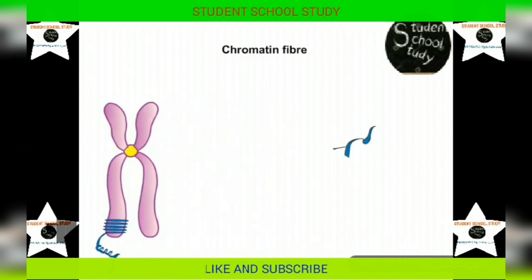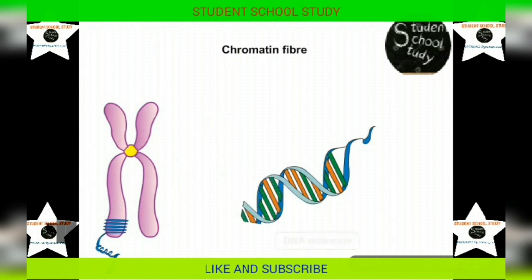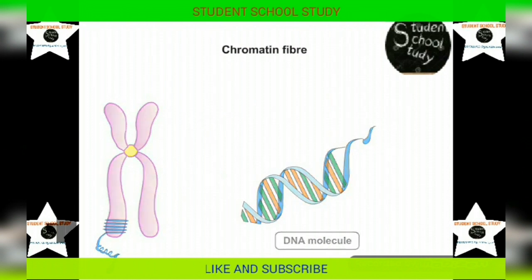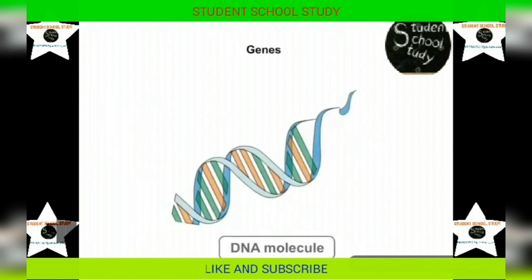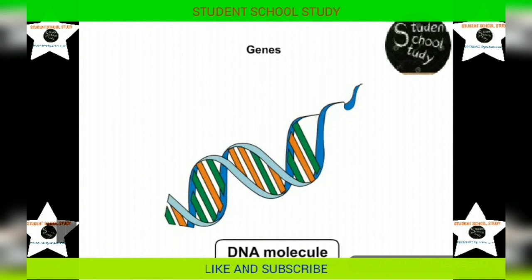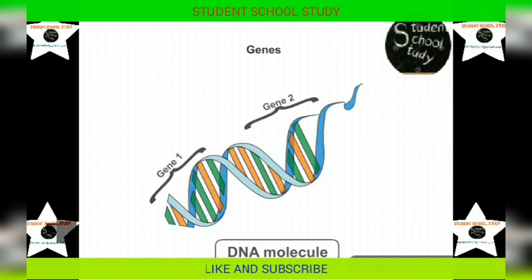Each chromatin fiber is nothing but a coiled stretch of the macromolecule called DNA. So, a chromosome is ultimately made up of DNA. Each DNA has many base sequences on it. A stretch of DNA represents a gene. A single chromosome might have millions of genes on it in the form of DNA sequences.